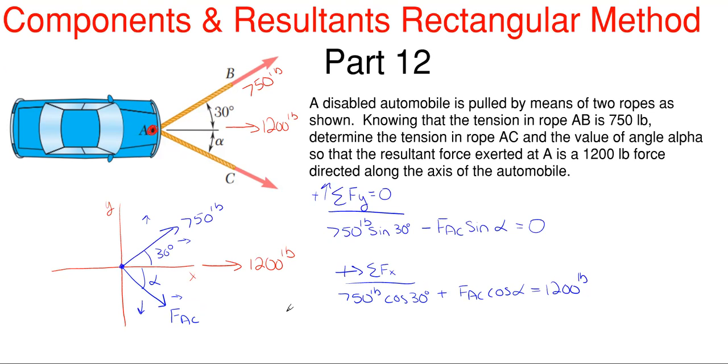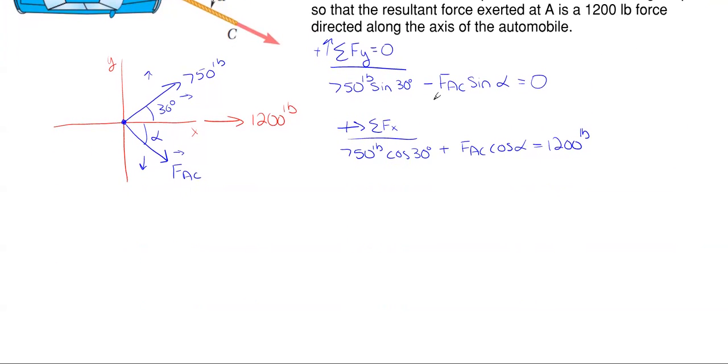Well, once again I cannot solve the x direction by itself, but I do have two equations with two unknowns, so what I can do here is substitution. I can get one of my terms equal to an equation that contains the other and then plug it back in. So from my F of y equation, what I can do is I can rearrange and I would have FAC times the sine of alpha would be equal to 750 pounds times the sine of 30. If I just rearrange this, taking FAC to the opposite side, well then FAC is just going to be 750 pounds times the sine of 30, and then all of that divided by the sine of alpha.